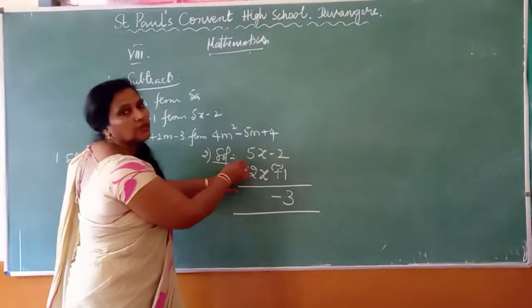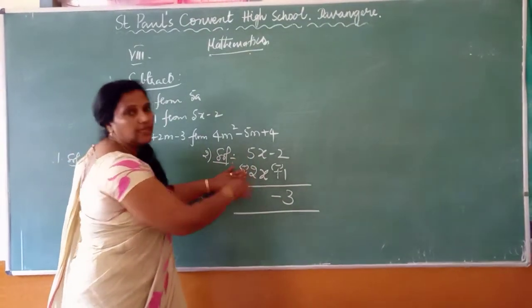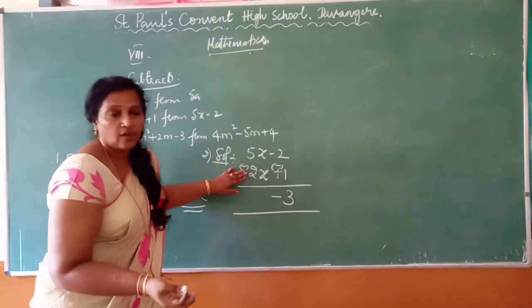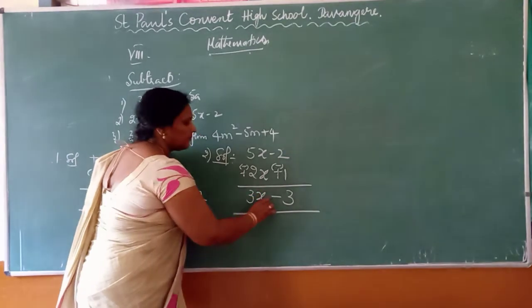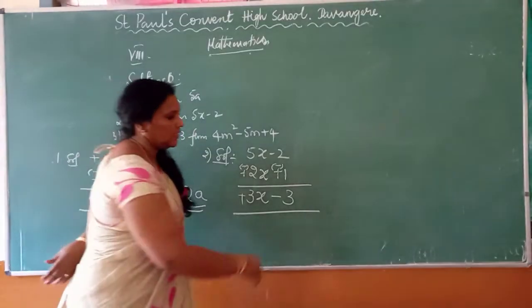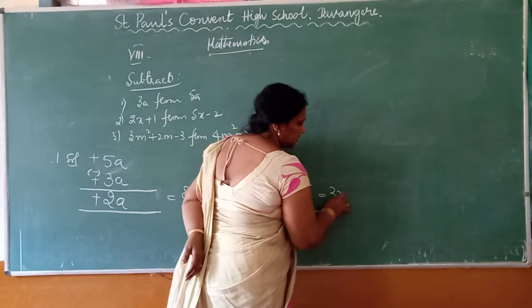Again close. With the new sign you have to consider. It is plus and it is minus. Different signs, you have to subtract. Five minus two is 3X. Greater number sign is plus. So it is 3X minus 3.